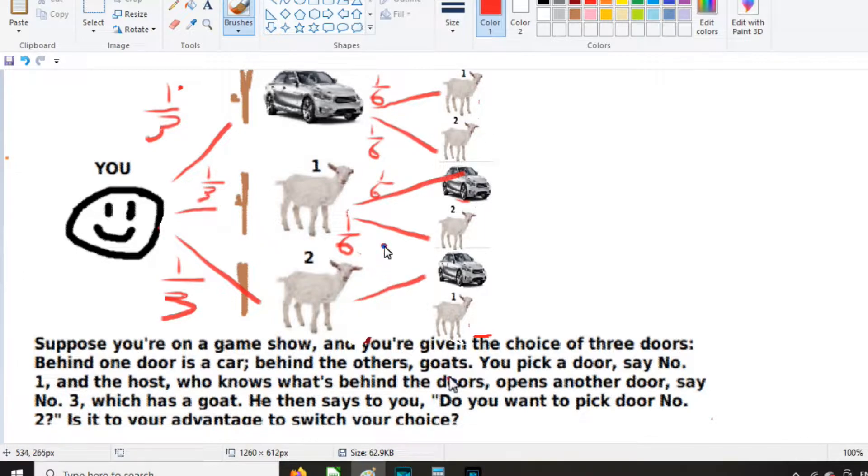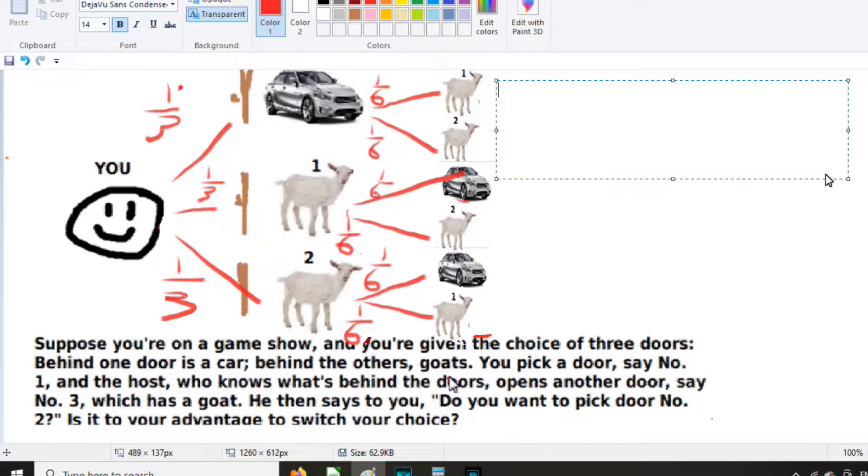Nowhere does it state that the host picking the car is not a possibility. So this is a possibility on our tree. There's a one-sixth chance you'll pick goat number two and he'll pick the car, and there's a one-sixth chance you'll pick goat number two and he'll pick goat number one.